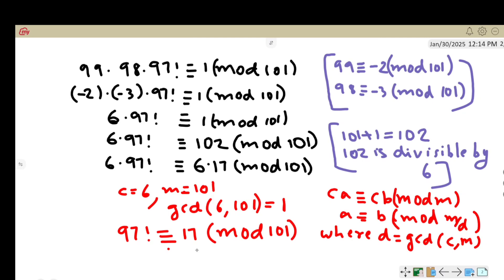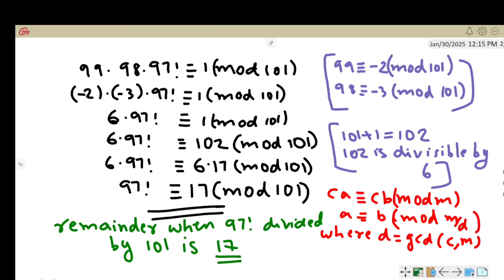Here we got the answer. So when 97 factorial is divided by 101, we get the remainder 17.